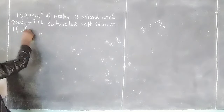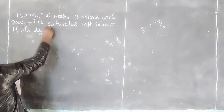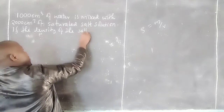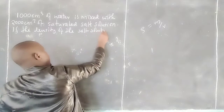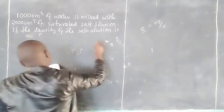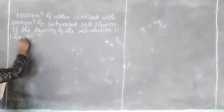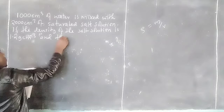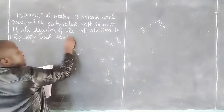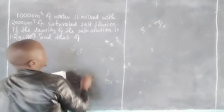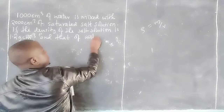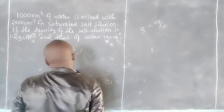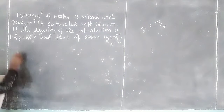The density of the salt solution is 1.2 grams per cubic centimeter, and that of water is 1 gram per cubic centimeter. We are asked to determine the density of the mixture.